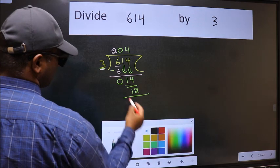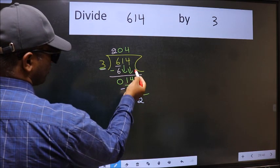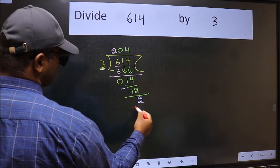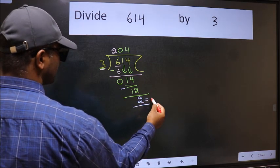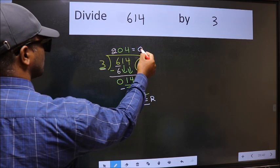Now we should subtract. We get 2. No more numbers to bring it down, so we stop here. This is our remainder and this is our quotient.